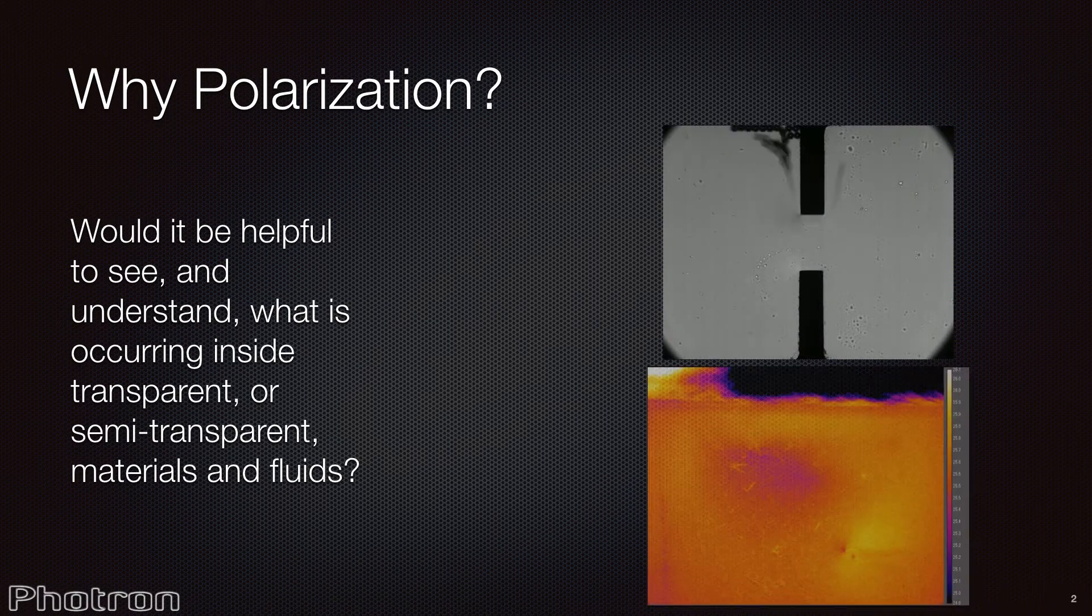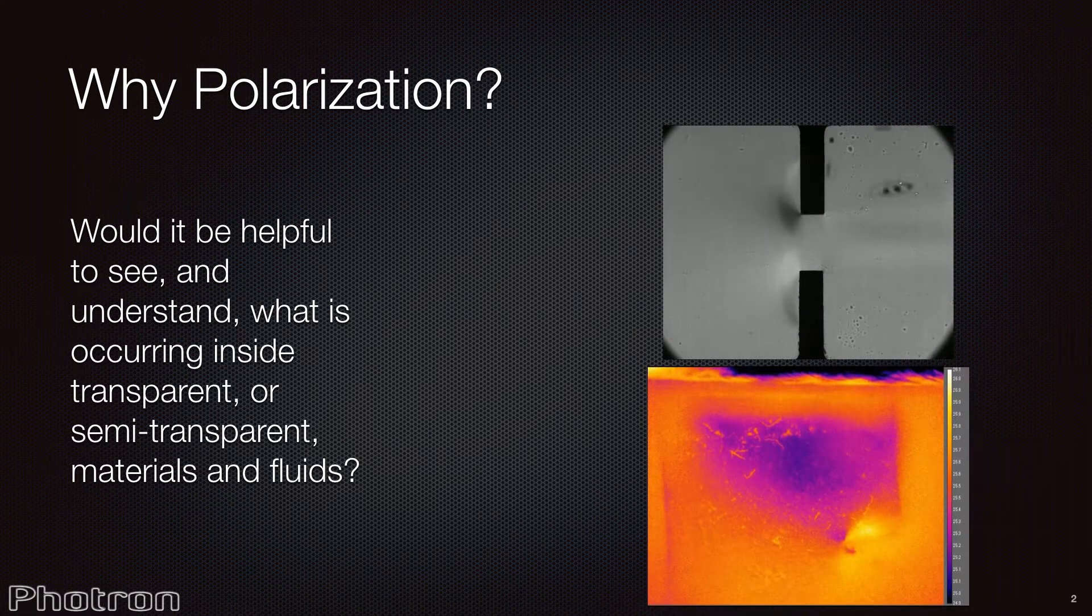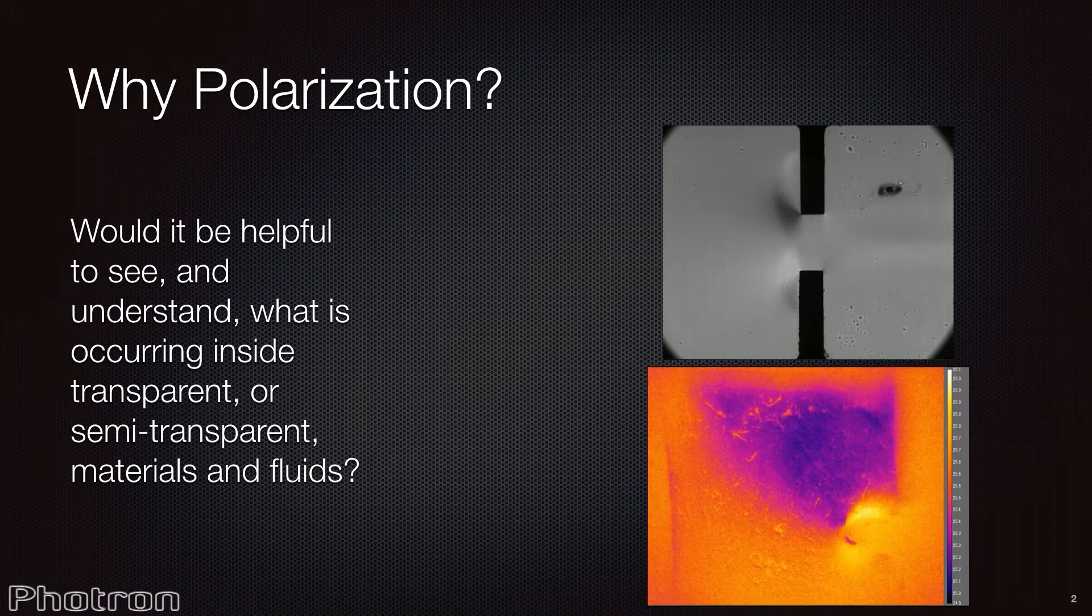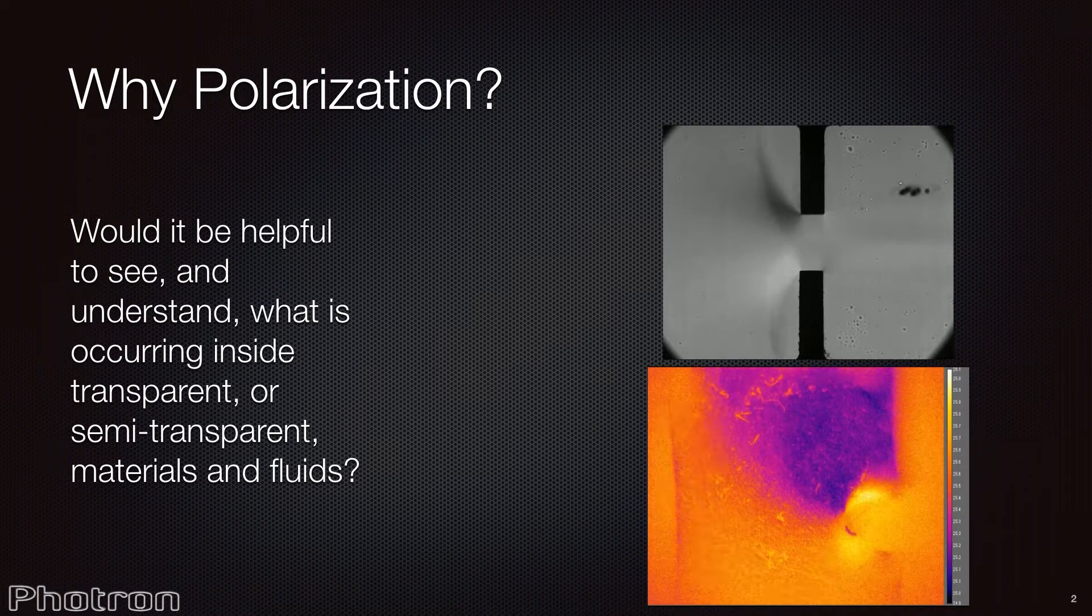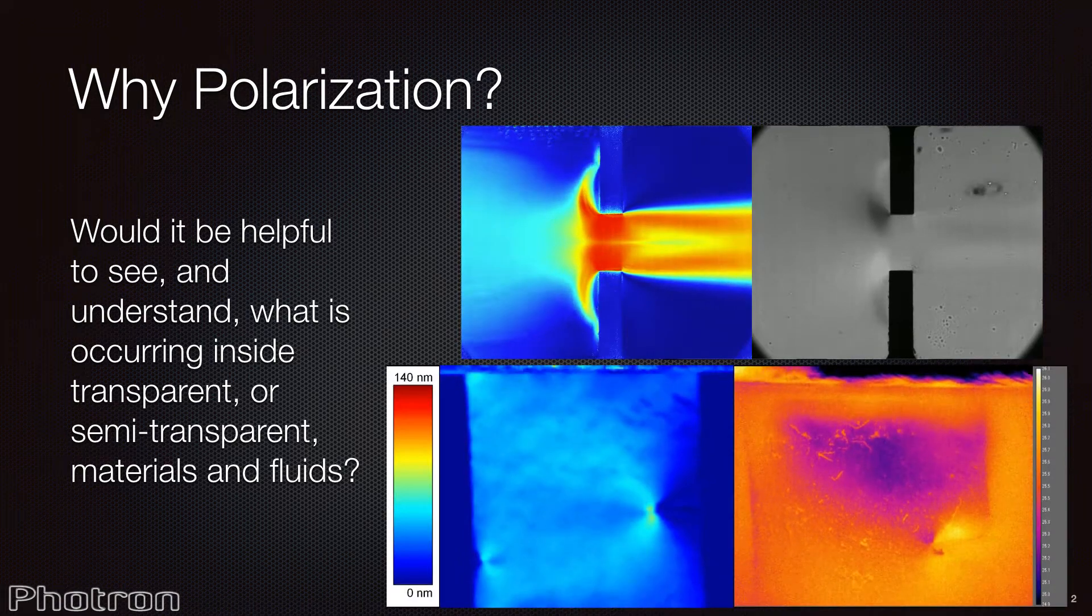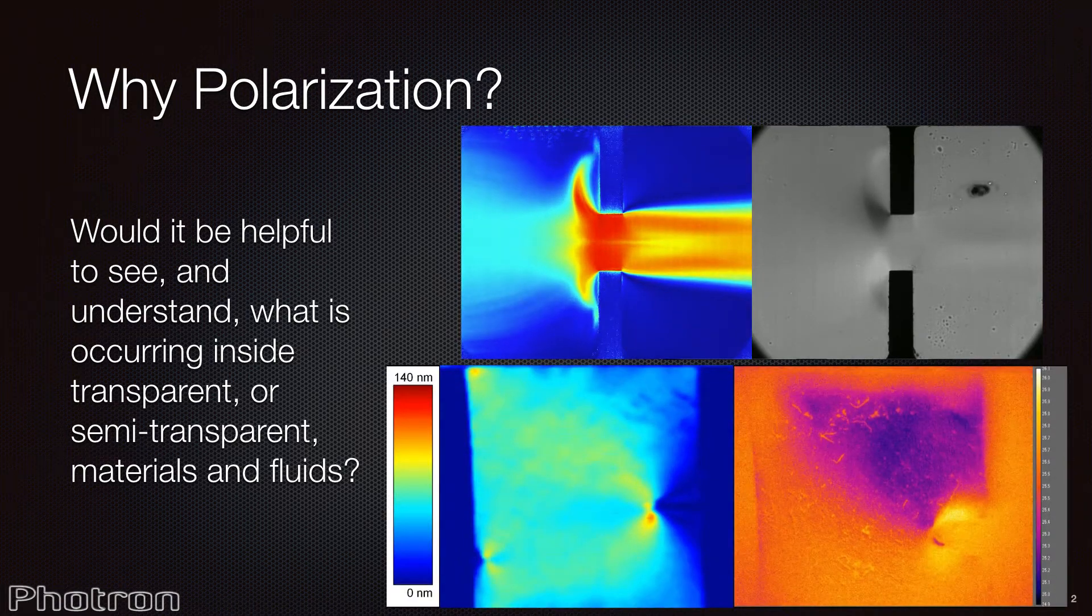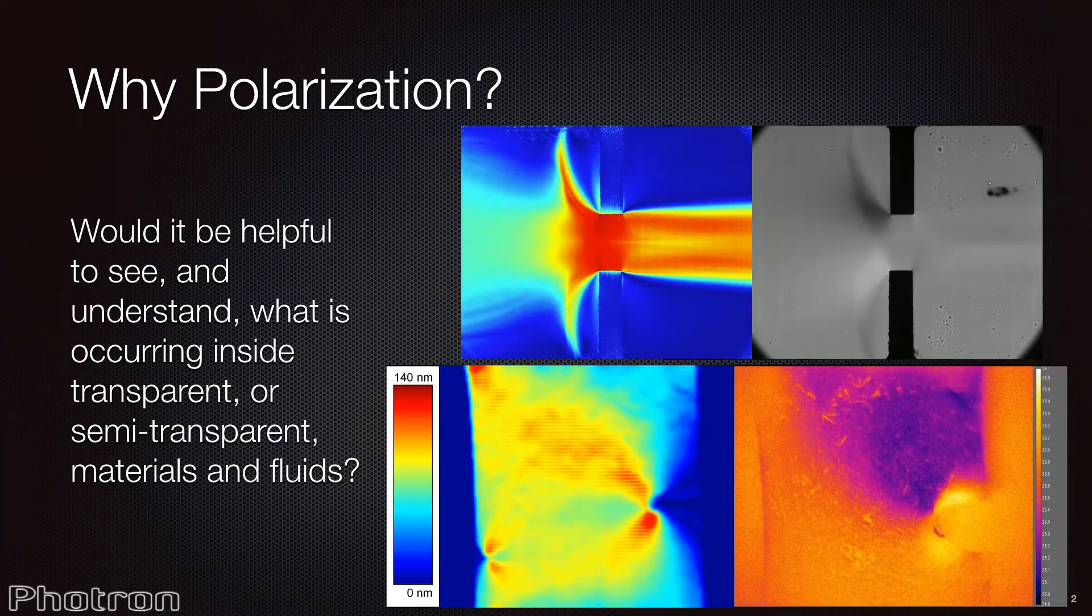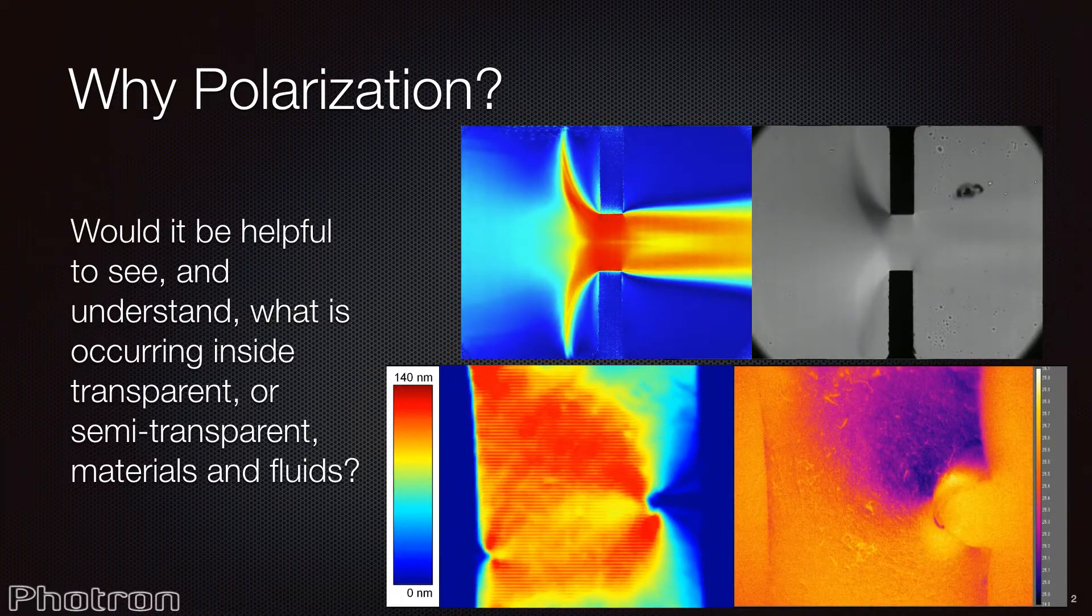Why polarization? There are many ways of imaging what is occurring on the outside of an object. Digital image correlation, infrared imaging, and conventional high-speed and 30 frames per second imaging to name just a few. But what happens if you want to see what is taking place within the object, beneath the surface?